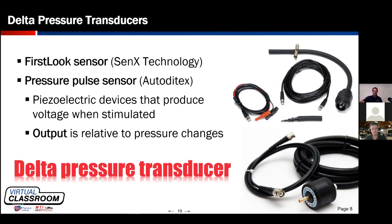For those who've dabbled in pressure waveform analysis or heard about it online or in Facebook groups — you may have heard the terms First Look Sensor and Pressure Pulse Sensor. These are brand names. The First Look Sensor is made by Cenex Technology; the Pressure Pulse Sensor is made by Autoditex, a company out of Europe. Both are the same type of device — a delta transducer — just like Kleenex is to tissue, or Nike is to sneaker. They are both piezoelectric devices.